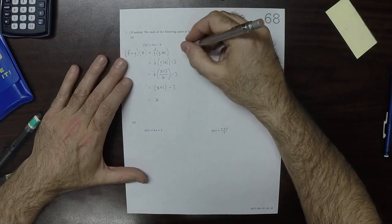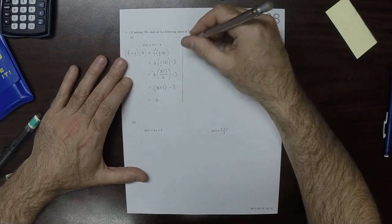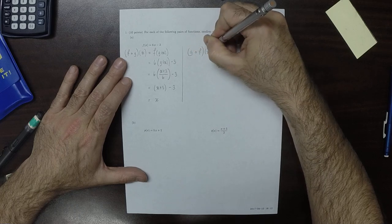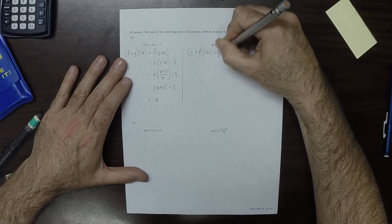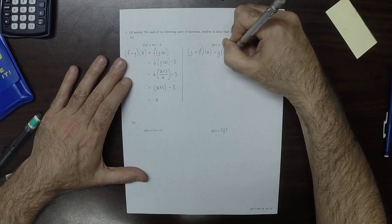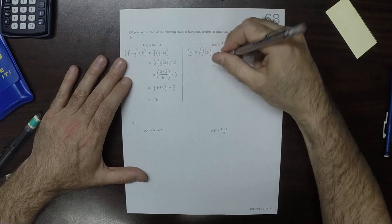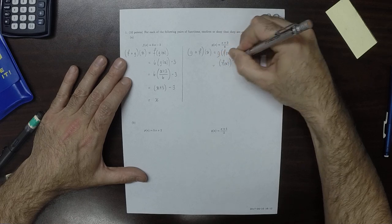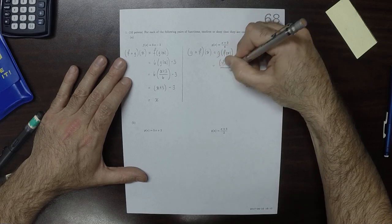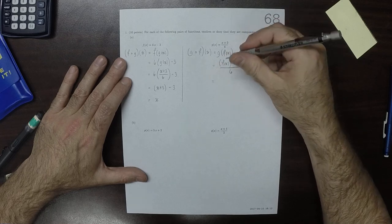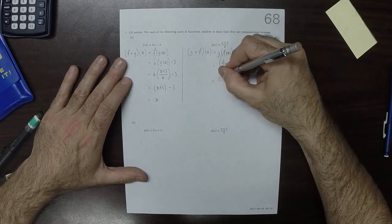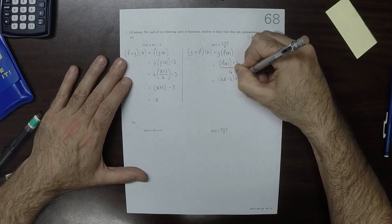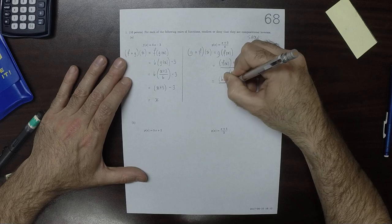In the other order, g circ f evaluate at x, well that's g of f of x, which is f of x plus 3 divided by 6, which is 6 x minus 3 plus 3 all over 6.